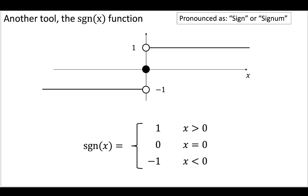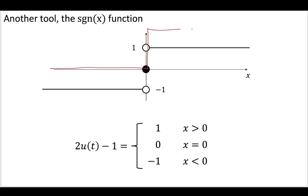The signum function, which is written as sgn of x, pronounced as sine or signum, is defined like this where it's minus one before x is equal to zero and plus one above x equal to zero and zero at x equal to zero. Clearly, we could also write this using the step function, which would be taking our step function, going from zero to two, and then just shift that down one.